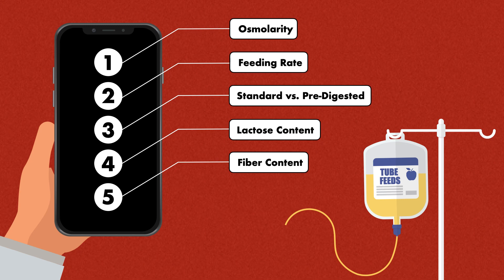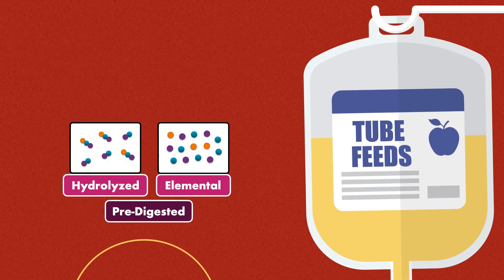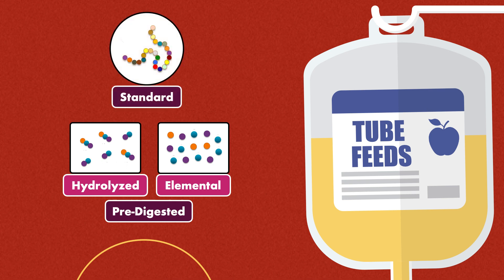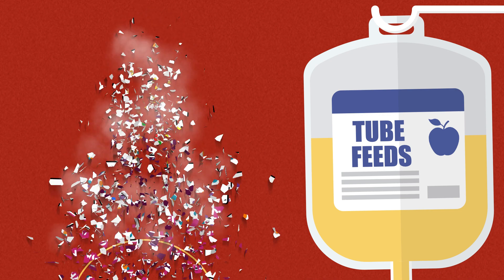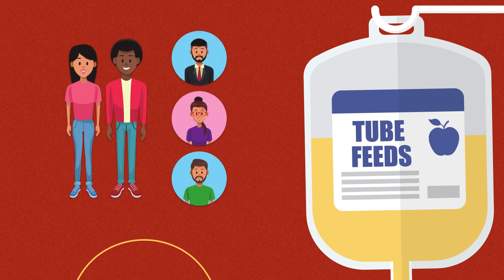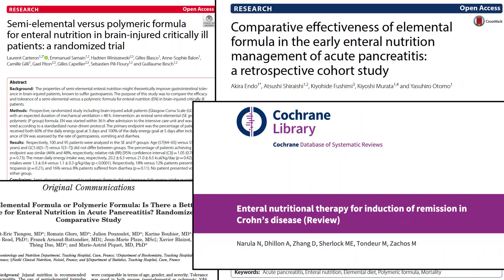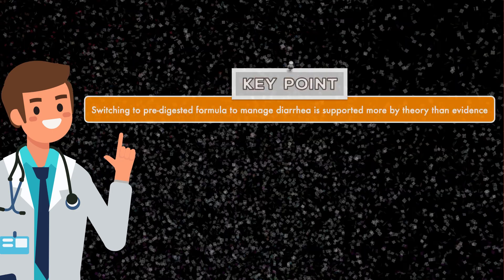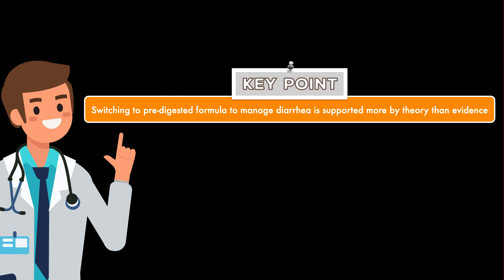The third reason we're going to explore is standard vs. predigested formula. Predigested formulas — which includes hydrolyzed and elemental formulas — contain nutrients that are already broken down, to make them easier to absorb than standard formulas where the nutrients are intact. Nevertheless, they haven't been consistently shown to be better tolerated than standard formulas. This isn't just in healthy subjects — it's also been shown in various disease states like critical illness, acute pancreatitis, and inflammatory bowel disease. This means that switching to a predigested formula to manage diarrhea is supported more by theory than evidence, and it shouldn't be considered as an intervention until other etiologies have been ruled out.